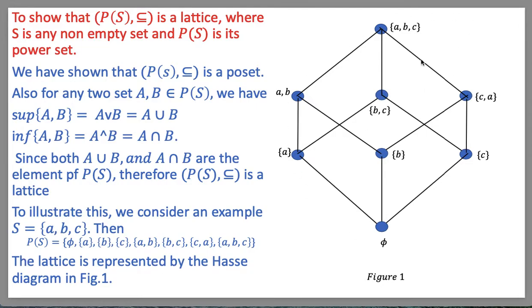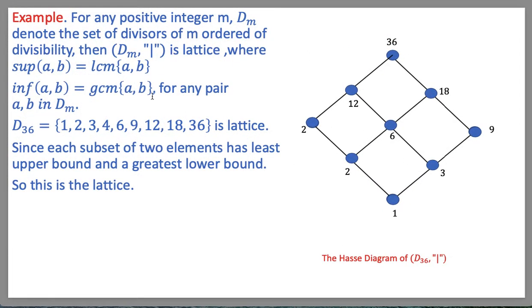This is the Hasse diagram of this lattice. One more example: for any positive integer m, let D(m) denote the set of divisors of m ordered by divisibility. Then D(m) together with divisibility is a lattice, where the supremum of {a, b} is the least common multiple LCM(a, b), and the infimum of {a, b} is the greatest common divisor GCD(a, b). Consider D(36).